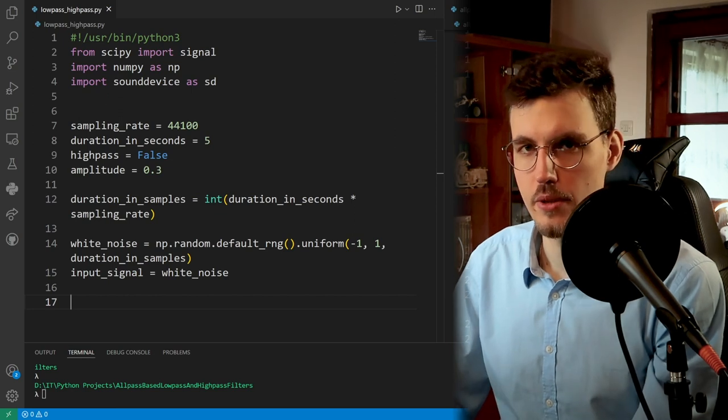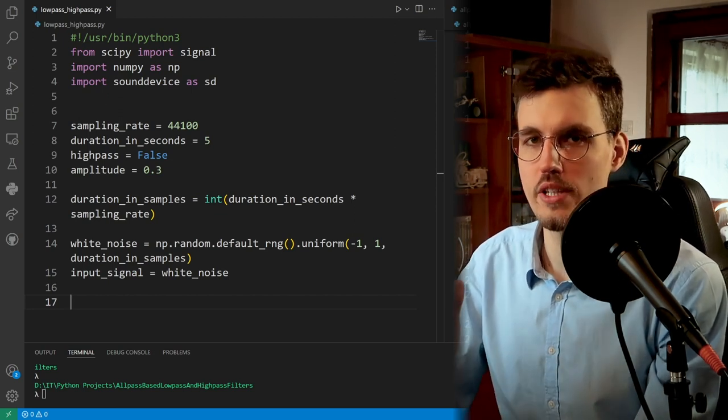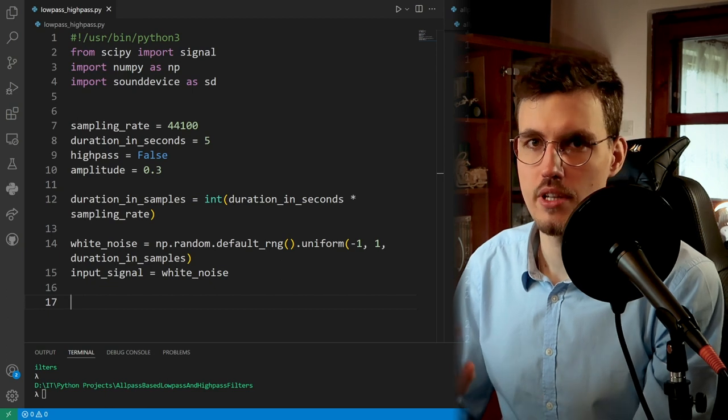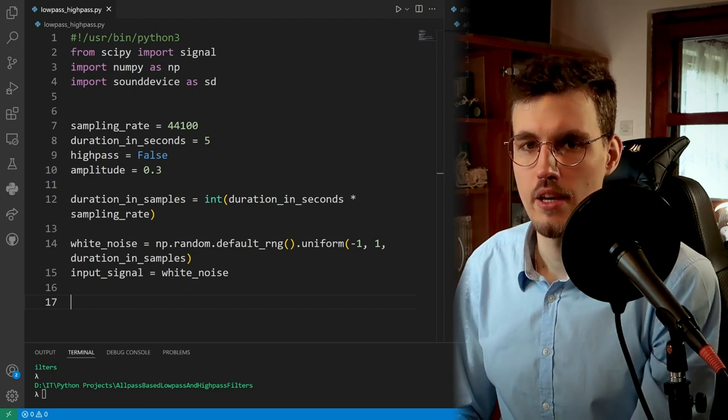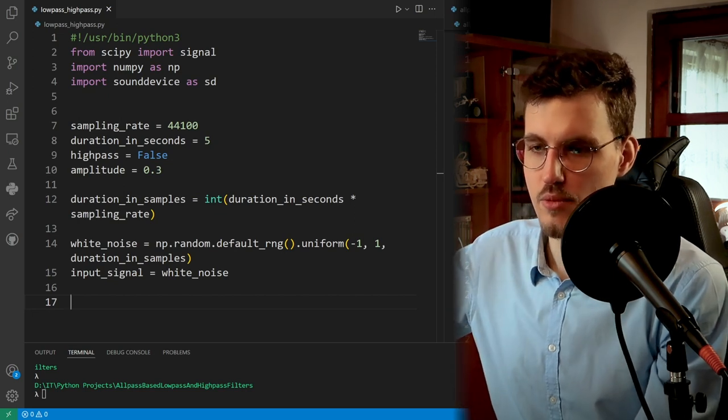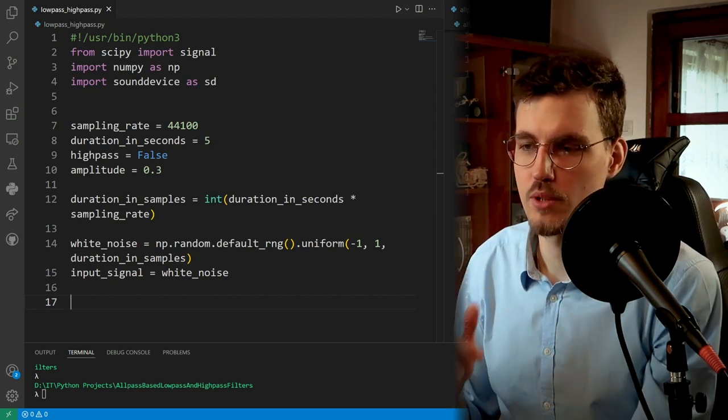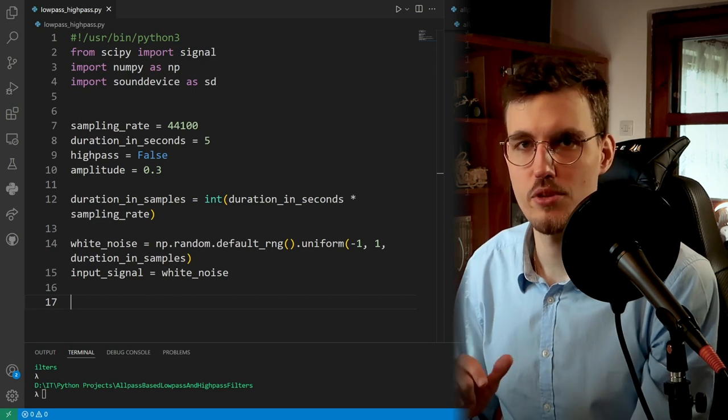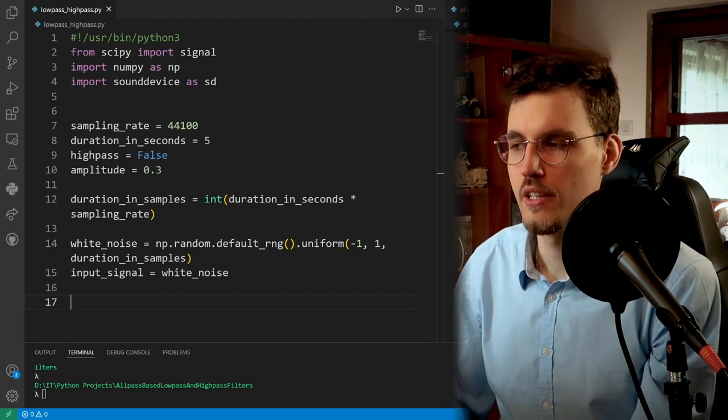So our cut-off frequency will go from 20 kHz to 20 Hz. So about the range of human hearing. And that will allow us to hear this nice smooth change of the cut-off frequency. But remember that human perception of frequency is non-linear. Therefore,